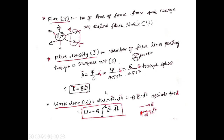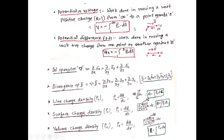Next we will see what is the work done on the charge. It is given by dW = −F bar · dL bar. But F bar = −Q E bar · dL bar against the field, so W is given by −Q times the integral of E bar · dL bar moving the charge from point 2 to 1 against the field. Potential, or voltage, is the work done in moving a unit positive charge from infinity to a particular point at distance R. Therefore, V = −∫ E bar · dL bar.